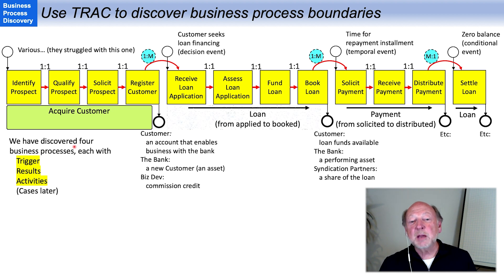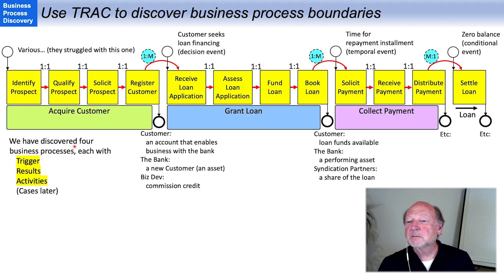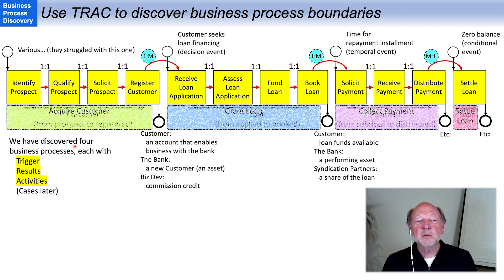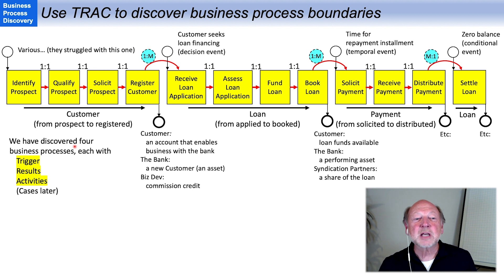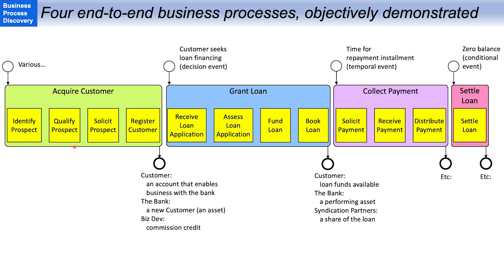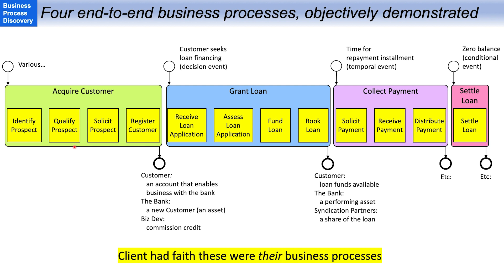The client agreed and named them as you see. This is our working papers, but what it led up to was this view — the almost highest-level view of what our processes are. We got here by applying objective tests and criteria, and the client had faith that these were their processes because they identified the activities, then synthesized them, and determined where the boundaries were.